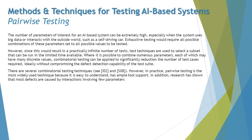The number of parameters of interest for an AI-based system can be extremely high, especially when the system uses big data or interacts with the outside world, such as a self-driving car. Exhaustive testing would require all possible combinations of these parameters set to all possible values to be tested. However, since this would result in a practically infinite number of tests, techniques are used to select a subset that can be run in the limited time available.